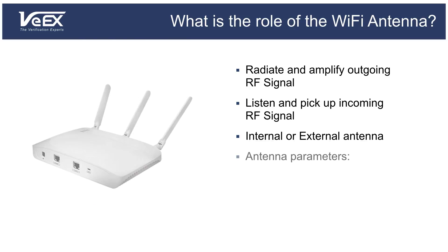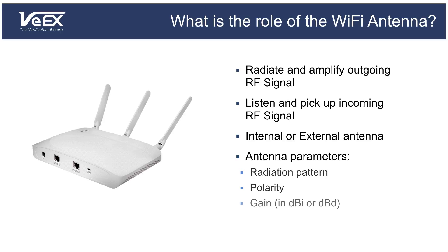Antennas are characterized by several parameters: the radiation pattern, which is the way the RF signal radiates from the antenna; the polarity, which indicates whether the antenna transmits or receives a signal horizontally or vertically; and the gain, which indicates the ability of the antenna to concentrate the signal in a particular direction.